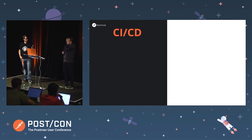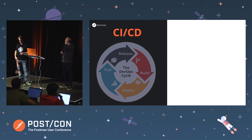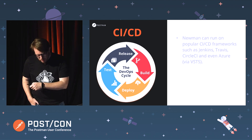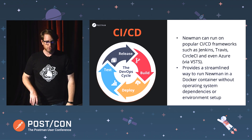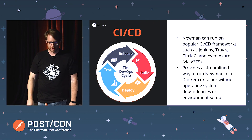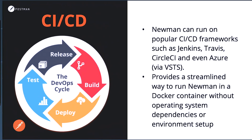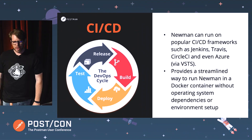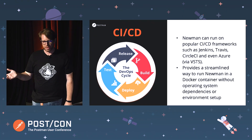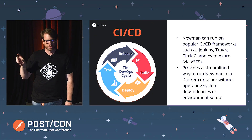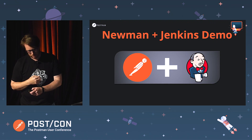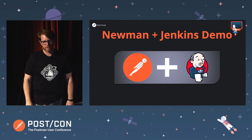This is the area where people will really want to see something - let's talk about the CI/CD pipeline and process. Newman can run on most of the popular frameworks out there - Jenkins, Travis, CircleCI, Azure - and I've seen people do integrations with other less popular ones through blog posts and articles. It gives us a streamlined way to execute Newman. You can also do this within a Docker image, which is something we maintain as well. I'm going to do a Newman and Jenkins demo.